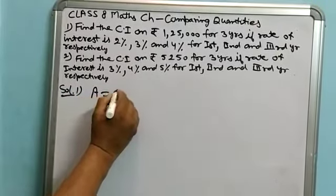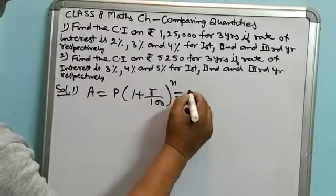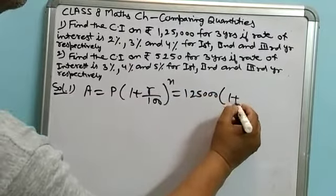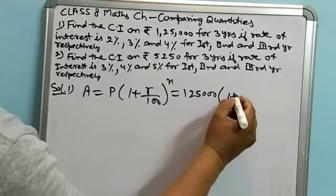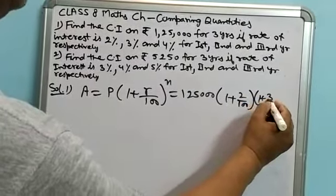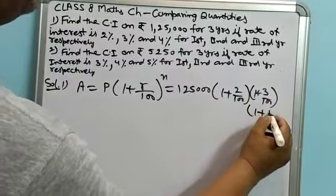Solution: Amount is equal to P times 1 plus R by 100 to the power n. So 1,25,000 times 1 plus 2 by 100 times 1 plus 3 by 100, next is 1 plus 4 by 100.